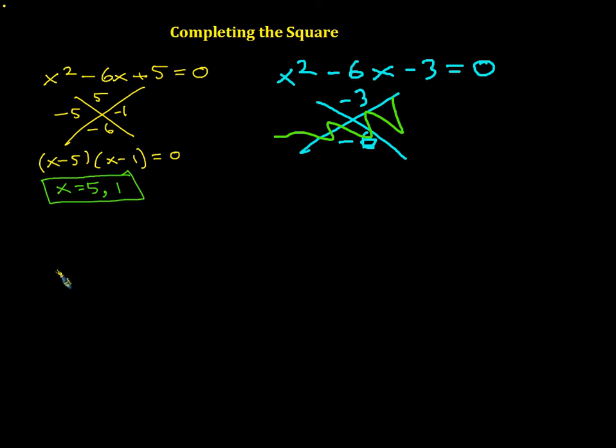Check this out. So if we have something like x squared and it equals 13, and we want to solve, we just go like this. We just take the square root of this side, take the square root of this side. Don't forget the plus or minus.